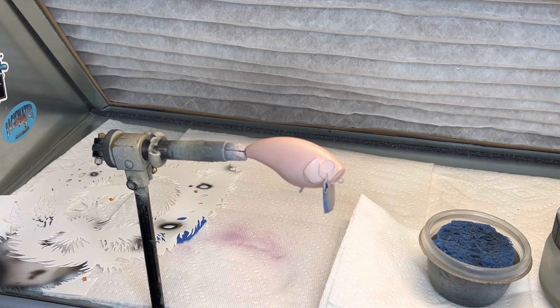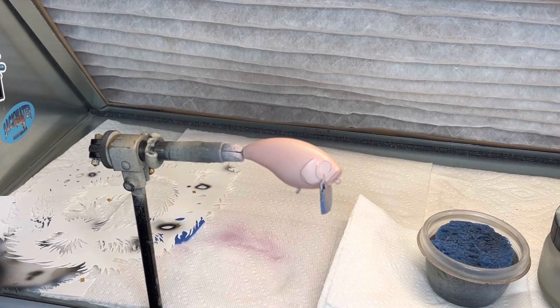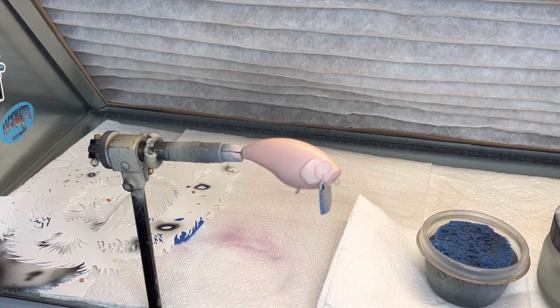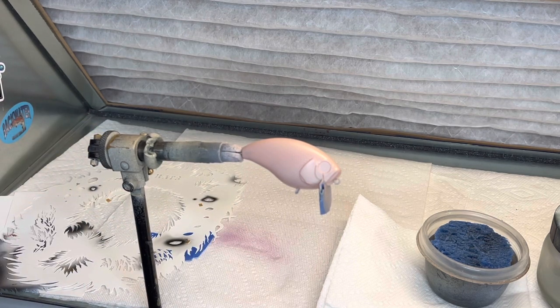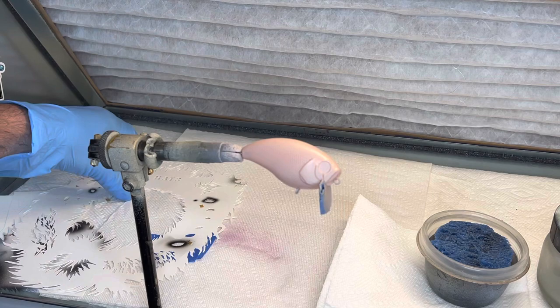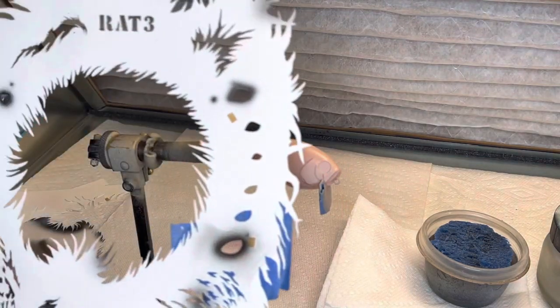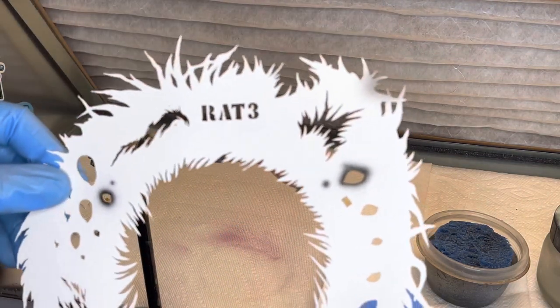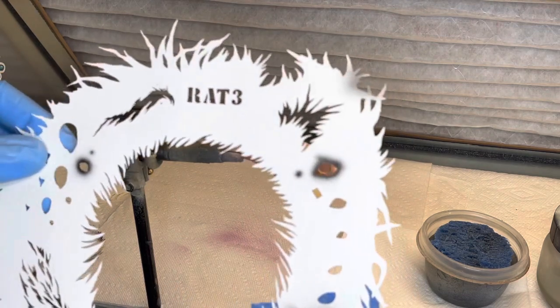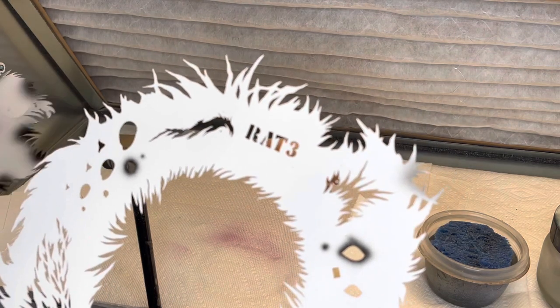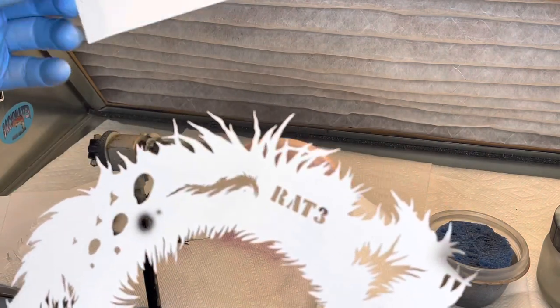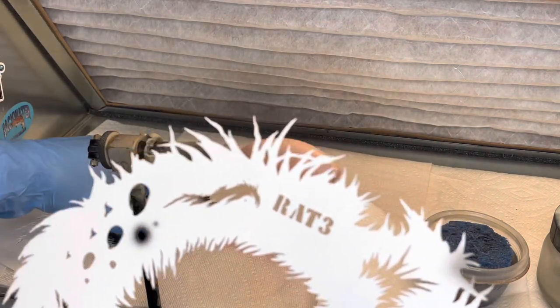All right guys, back in the booth for another paint session. Tonight we're going to paint a rat using custom Insane Custom Stencils rat wheel number three, a really unique stencil from Russ Allen. I've got the positives and negatives, and I've cut up the outside into pieces that I can use. Very versatile.